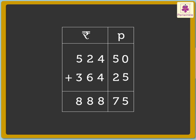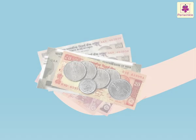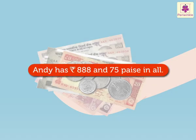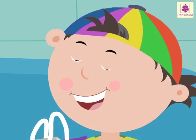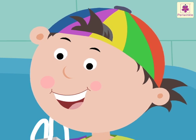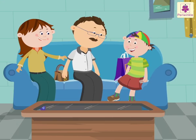So the total is 888 rupees and 75 paise. Thus, Andy has 888 rupees and 75 paise in all. He is so happy and planning to go shopping.